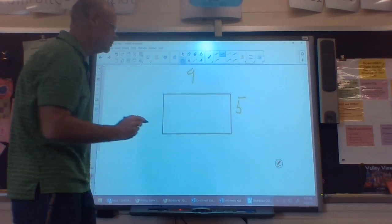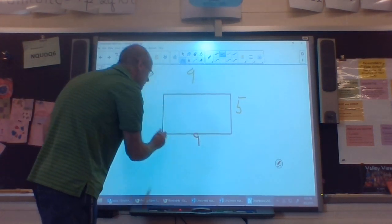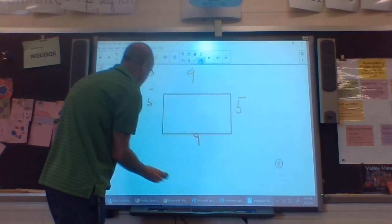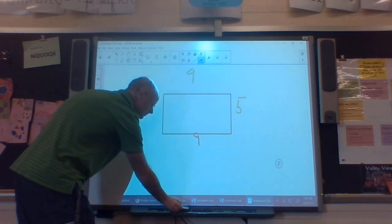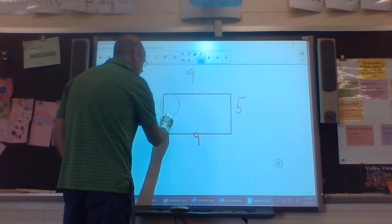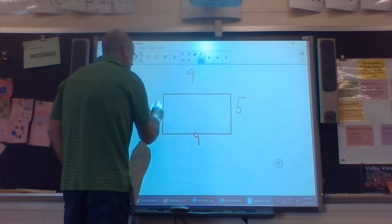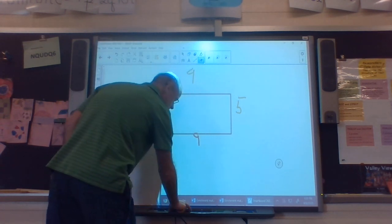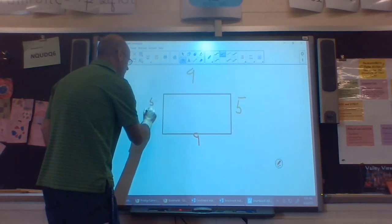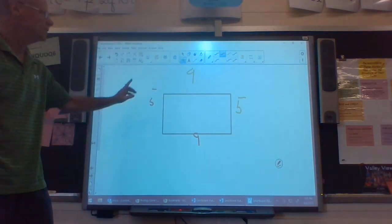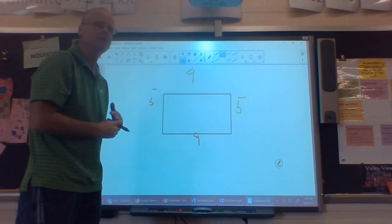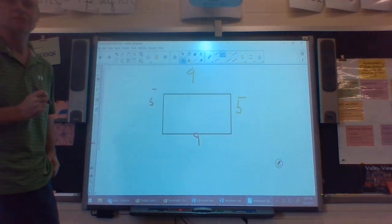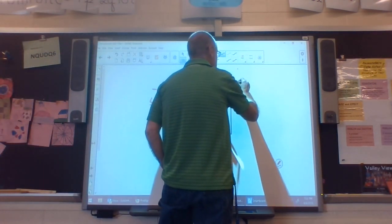To find my perimeter, I like to go and fill in the rest of my sides. This side is nine, this side is five. Nine plus five is 14 plus nine is 23 plus five is 28. I'll say inches again.